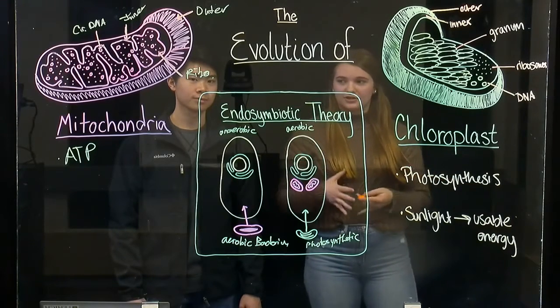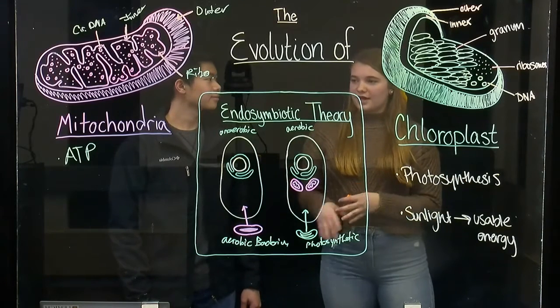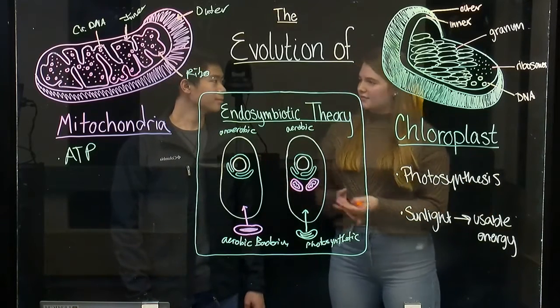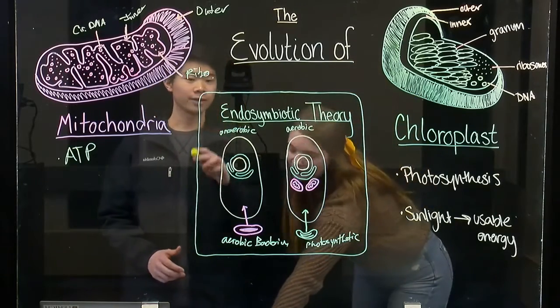So we pose this question: why would an ancestral eukaryote even engulf a mitochondria or chloroplast in the first place? Well, let's look at this figure right here for the endosymbiotic theory.